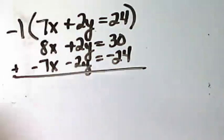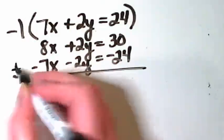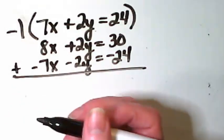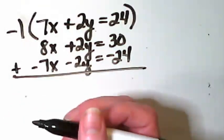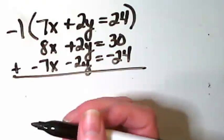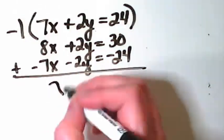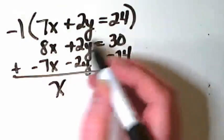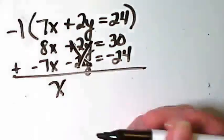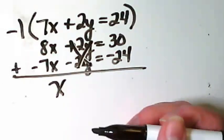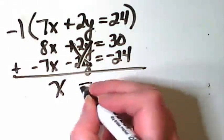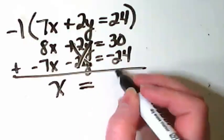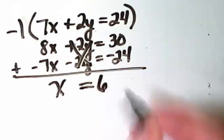Put my little plus sign here to remind myself that I am adding the like terms. What happens with 8x and minus 7x? I end up with just x. What happens with positive 2y and negative 2y? They are eliminated. 30 minus 24 is 6.